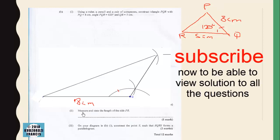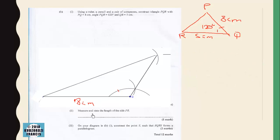The second aspect says measure and state the length of the side PR. So if you do it correctly, you should get 11.36 centimeters, plus or minus 0.01 centimeters.